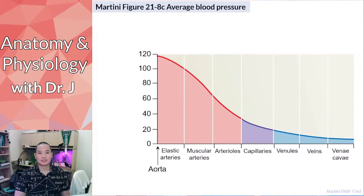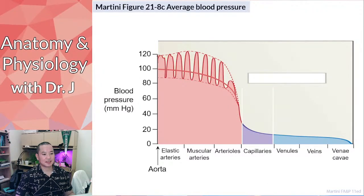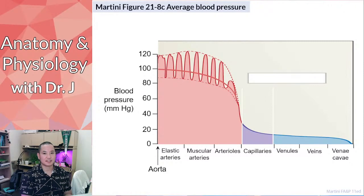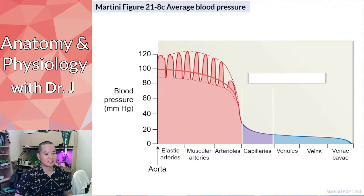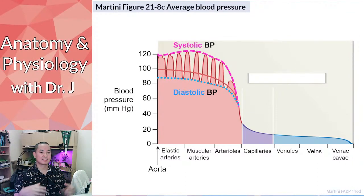This graph shows average blood pressure across different vessel types. In the arteries, pressure has a large amplitude — it goes up and down — because arteries are closer to the heart. The upper bound of this oscillation is systolic blood pressure, and the lower bound is diastolic. The heart contracting increases pressure (systolic), and relaxing lowers it (diastolic). This dampens as you travel further from the heart.